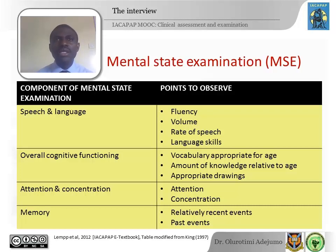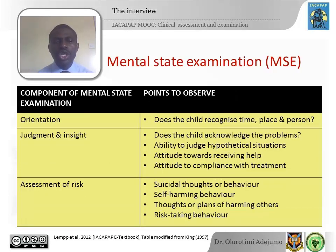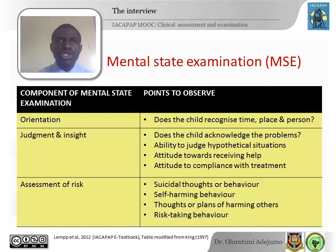How much is the child able to pay attention? Is the child focused, or does their attention move from object to object? How much does the child remember about things that happened recently or weeks and months in the past? Does the child know where they are and who their parents are? Does the child understand the problems that brought them to see you? Is the child able to judge hypothetical situations? What is the child's attitude towards receiving help and cooperating with treatment? Also assess risk — check for suicidal thoughts or behavior, self-harming behavior, and any plans of harming others.